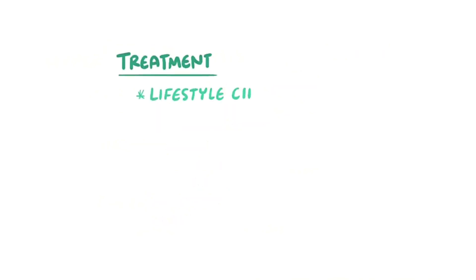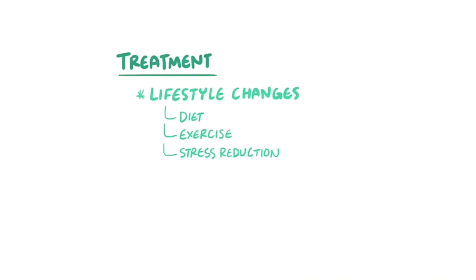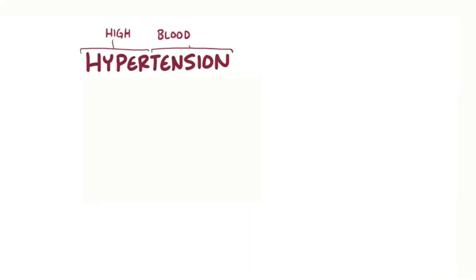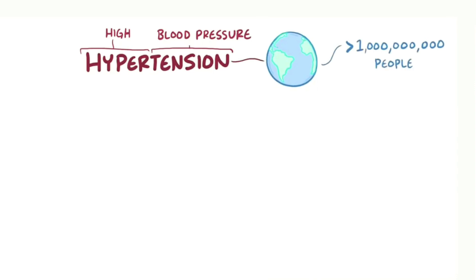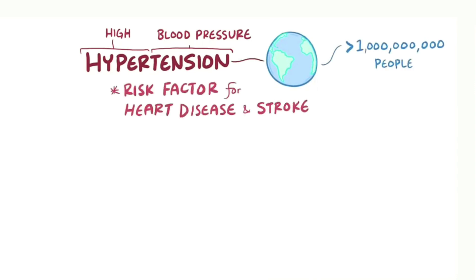The first choice for treatment of hypertension is lifestyle changes, including changes to diet, exercise, and stress reduction techniques. In addition, various antihypertensive medications may also be prescribed. As a quick recap, hypertension affects over a billion people worldwide and is a major risk factor for heart disease and stroke over time.